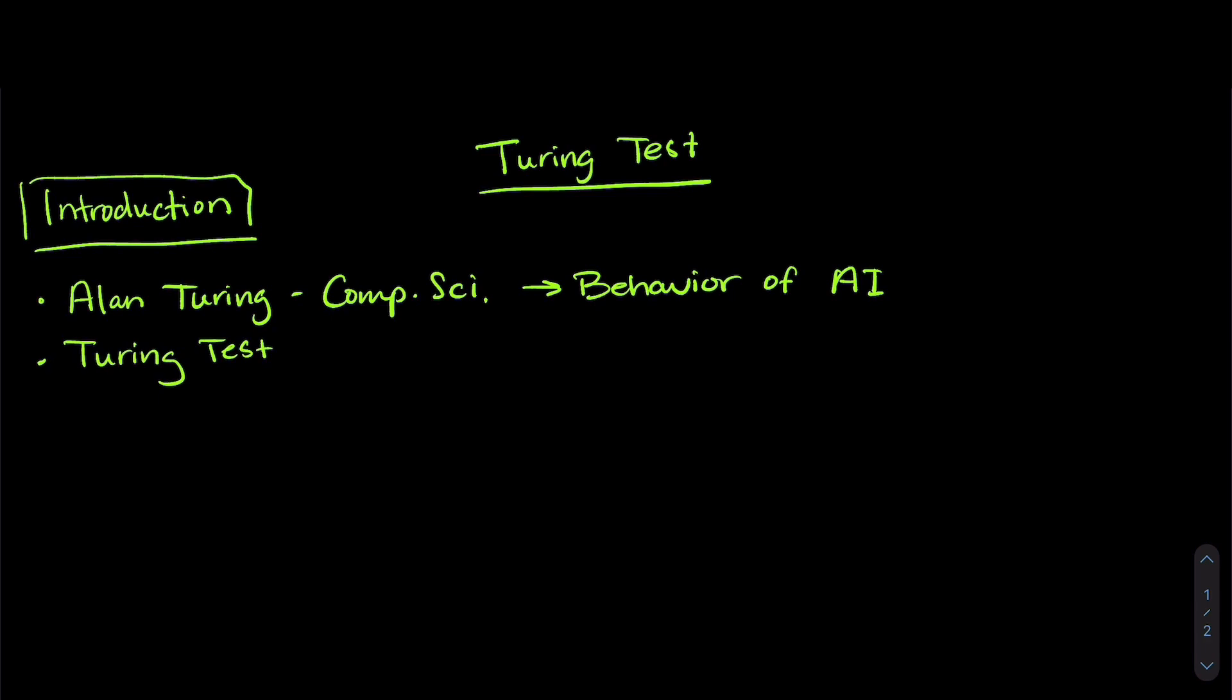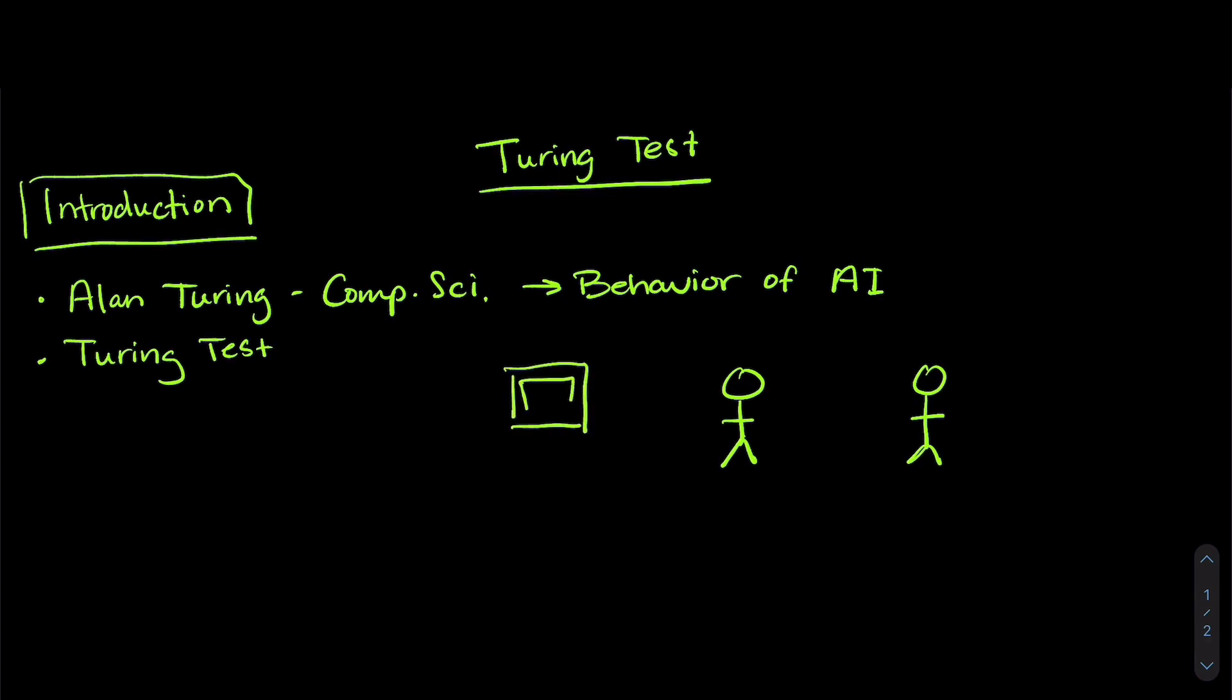The test measures how intelligent computers actually were, if a computer can behave like a human. Think about a person in a room and there is a person in another room and then in a third room there is a computer and both are talking to the person in that middle room. If the computer can convince the person in that middle room that they are a human, then they pass that Turing Test.